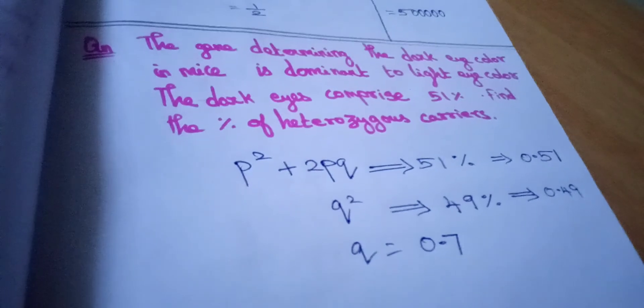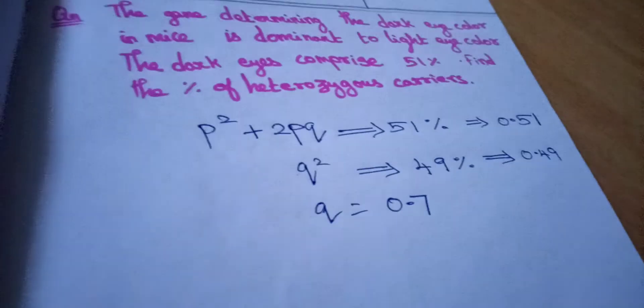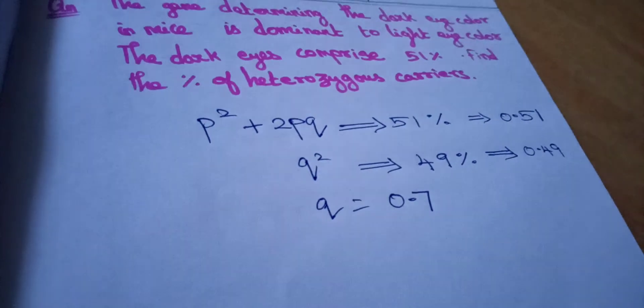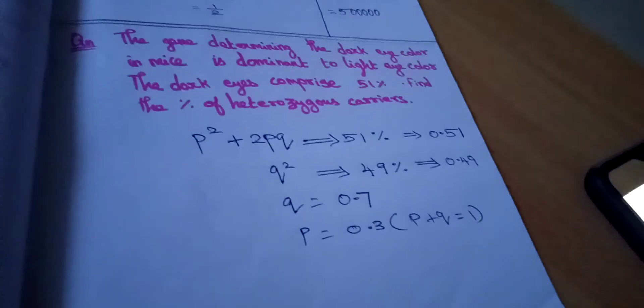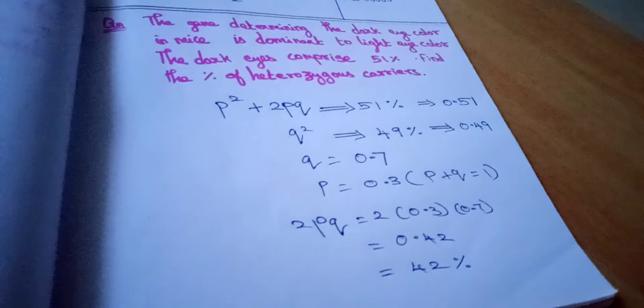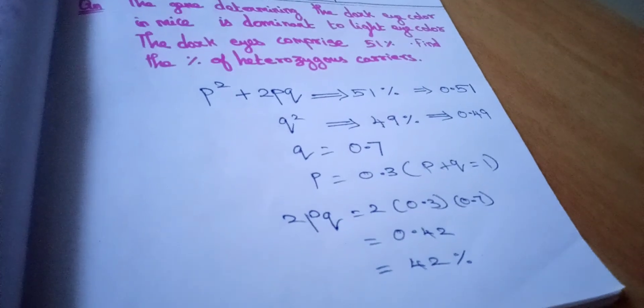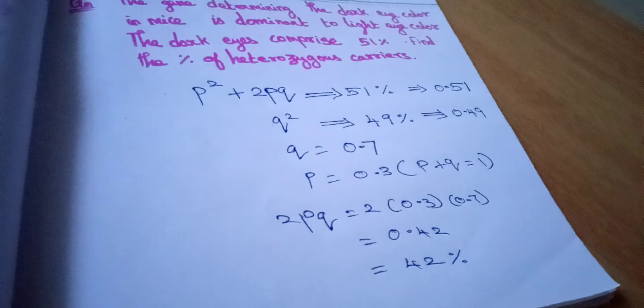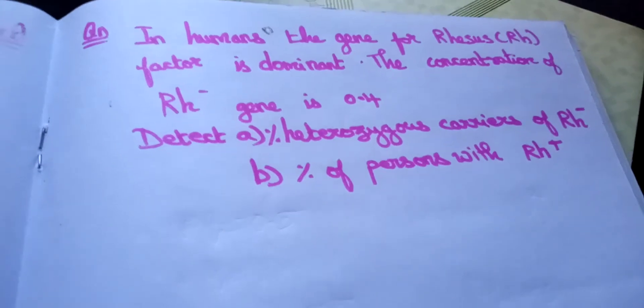We need heterozygous carriers which is 2PQ. Q is 0.7 then P is 0.3. We need 2PQ. Okay, 2PQ which is 2 × 0.3 × 0.7 = 0.42, which is 42%.